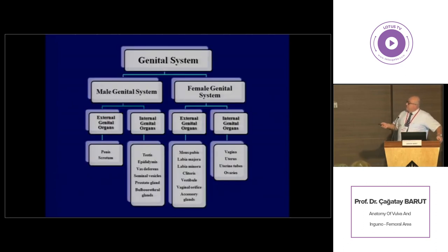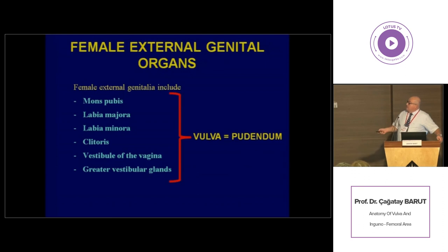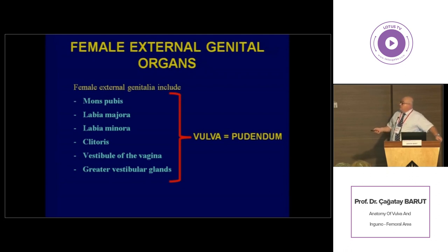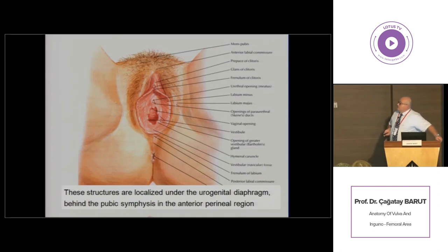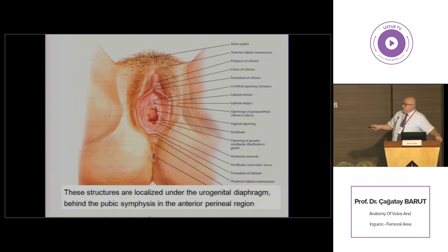The genital system is divided into external and internal genitalia in both genders. External genitalia contains mons pubis, labia majora, labia minora, clitoris, vestibule of vagina, and certain glands, and they are totally referred to as vulva. I am going to talk about all these structures, which are localized under the urogenital diaphragm behind the pubic symphysis, placed inside the anterior triangle of the perineal region, or the urogenital triangle.